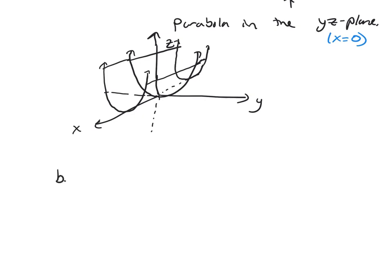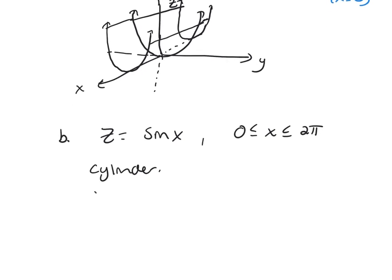Let's look at one more: Z equals sine X and X is going to be restricted to 0 to 2π. So here I'm missing my Y variable and so I'm going to get a cylinder and my generating curve